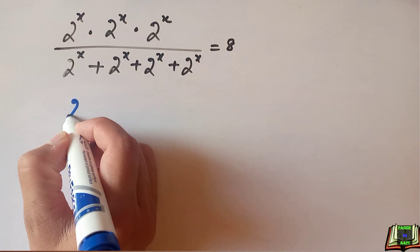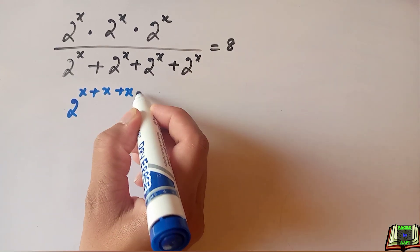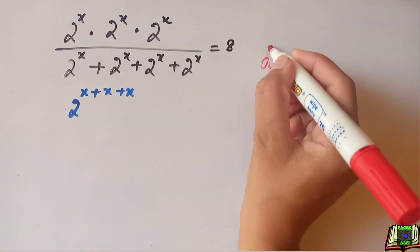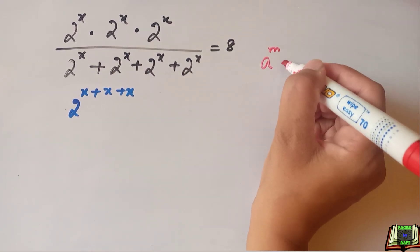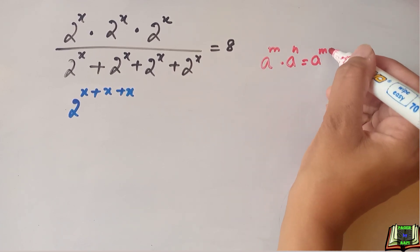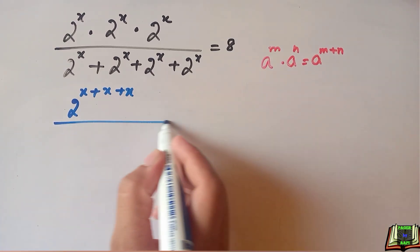The values are multiplying with the same base, so we can add the powers using the product rule of exponent that says if a raised to power m times a raised to power n, then this is equal to a raised to power m plus n. Now for the denominator, we are going to add these values.